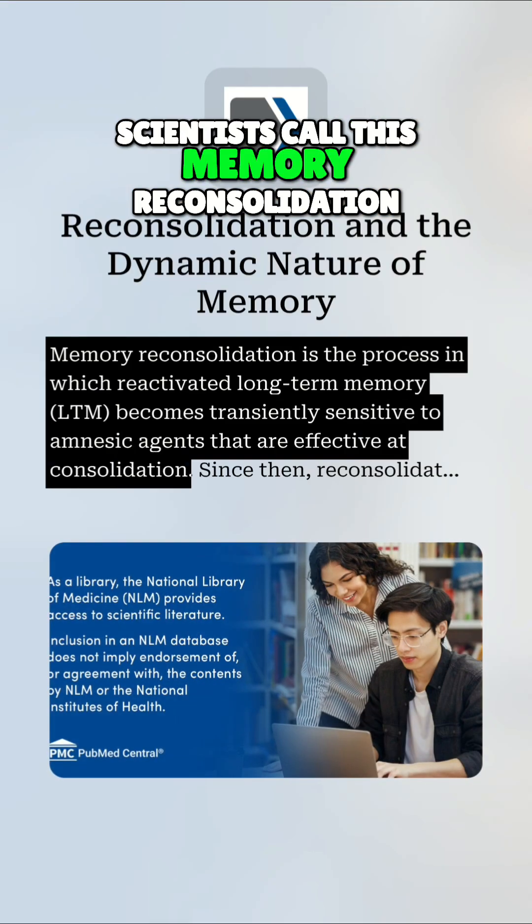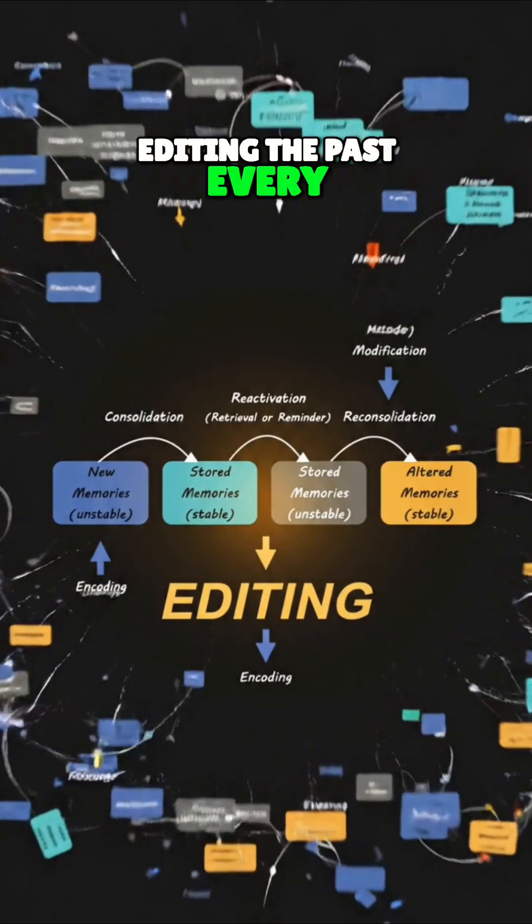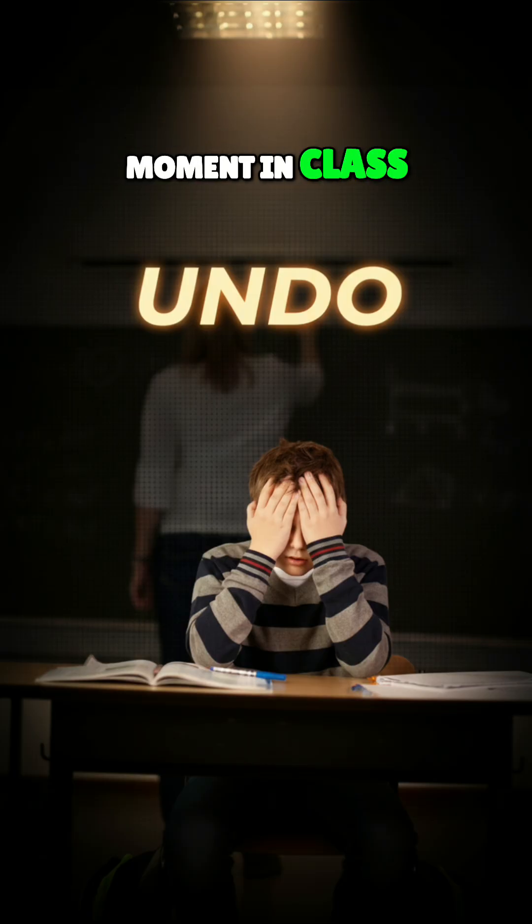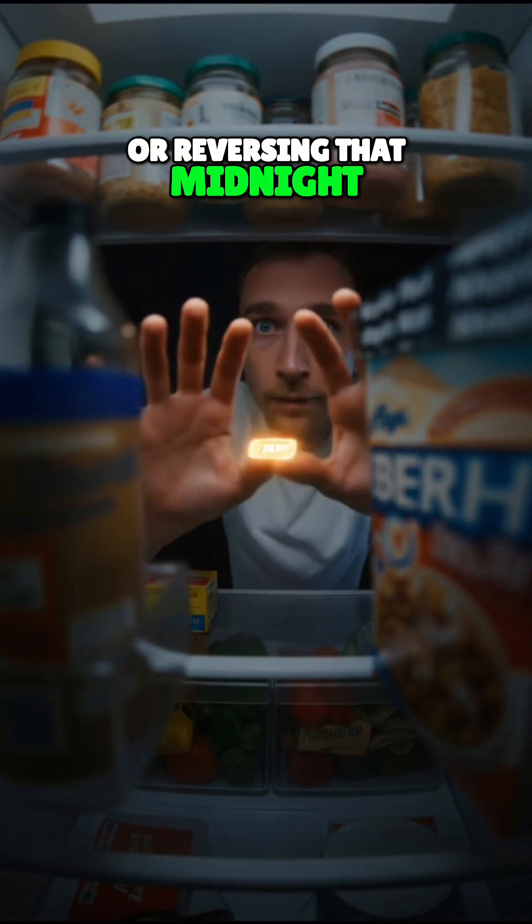Scientists call this memory reconsolidation, basically editing the past every time you remember it. Picture undoing a cringe moment in class, unlearning a fear of spiders, or reversing that midnight snack impulse.